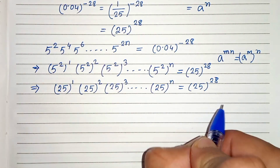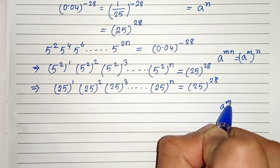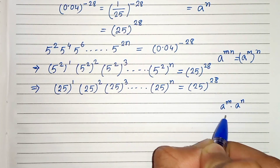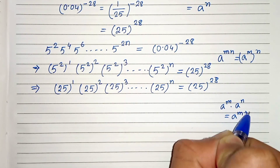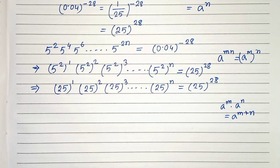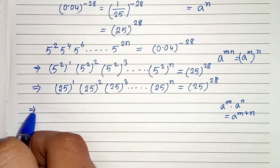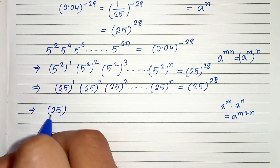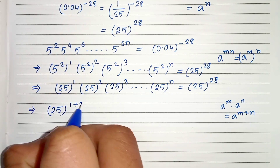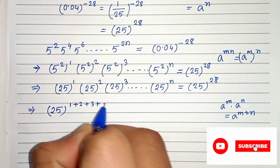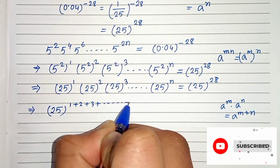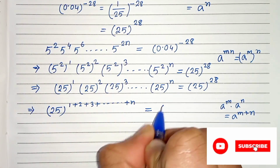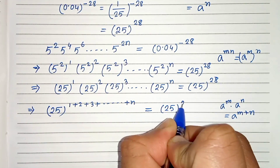And we know that a to the power m times a to the power n can be written as a to the power m plus n. So therefore we can write 25 whole to the power 1 plus 2 plus 3 plus dot dot dot plus n equals 25 whole to the power 28.